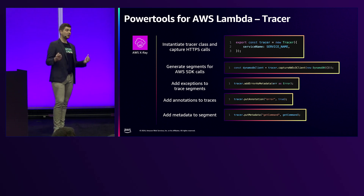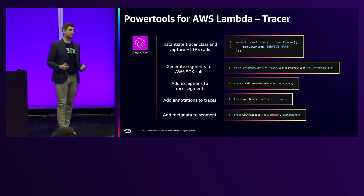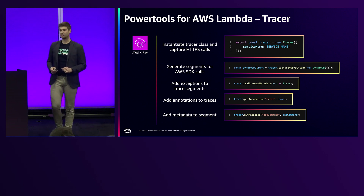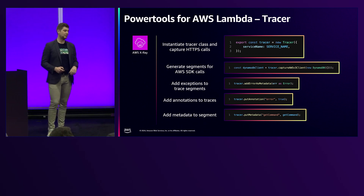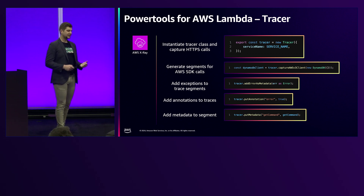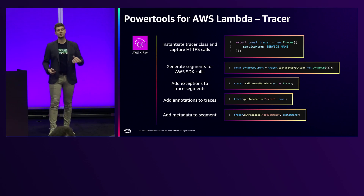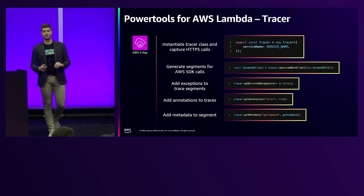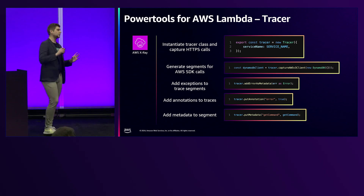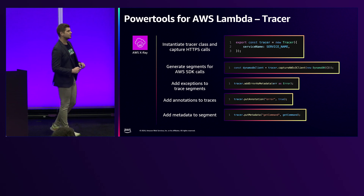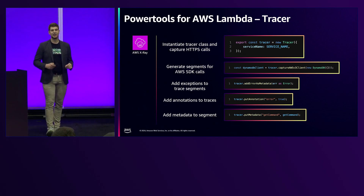We had our exception directly correlated with the segment in our trace. That was possible because you can easily add errors as metadata to the tracing information. Just pass in the error message and it will be added to the trace. You can also add annotations to filter down the traces in your system — for example, error status or a customer ID — so you can filter traces in the trace view based on these attributes.